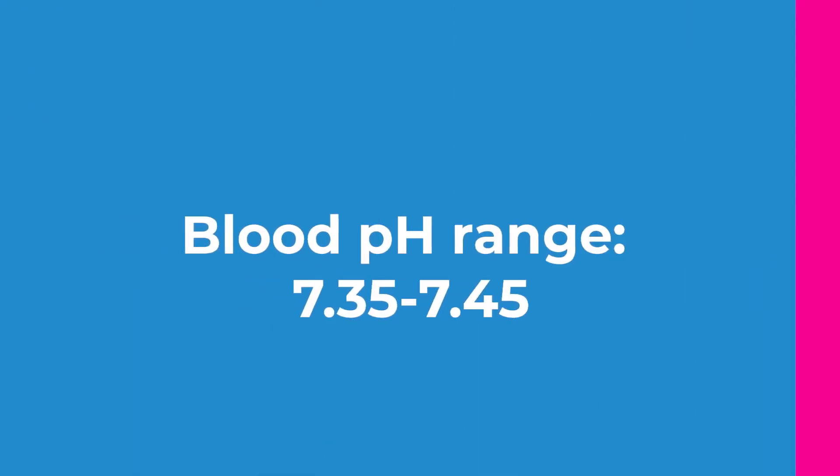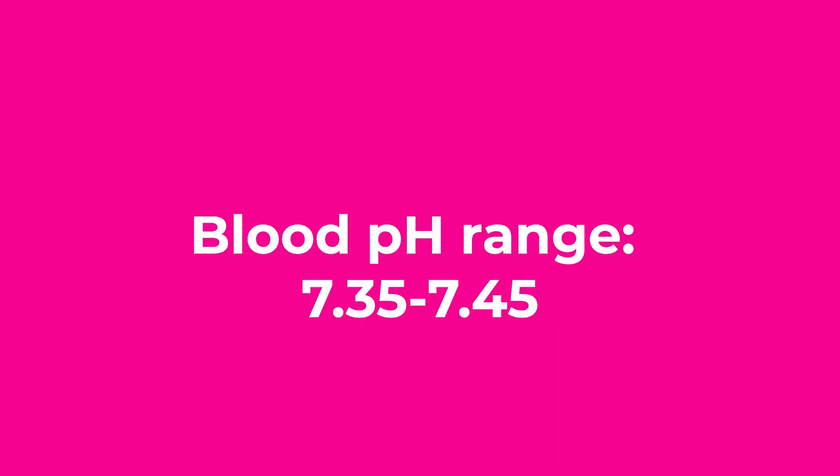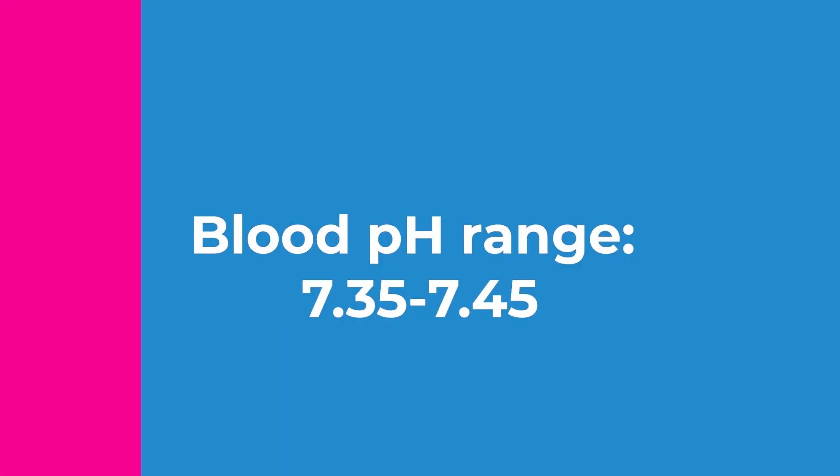These values must fall within a specific range. For example, your blood pH needs to stay between 7.35 and 7.45 on the pH scale. If it drifts out of that, you could be in trouble and your body won't function properly.